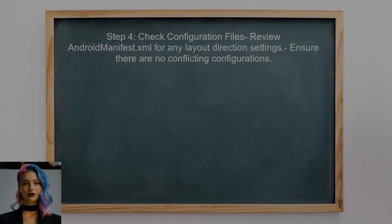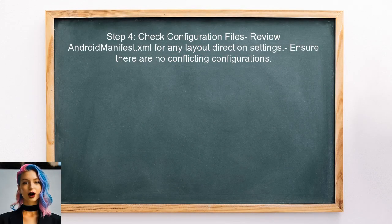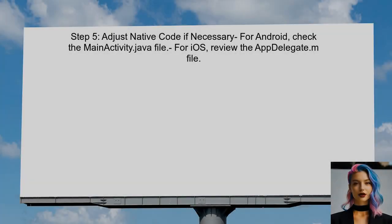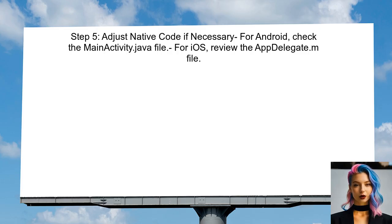If you want to ensure that the layout remains in right-to-left mode, also check the app's configuration files for any conflicting settings. If you're still facing issues, you may need to make adjustments in the native code — this could involve modifying the Android or iOS project settings.